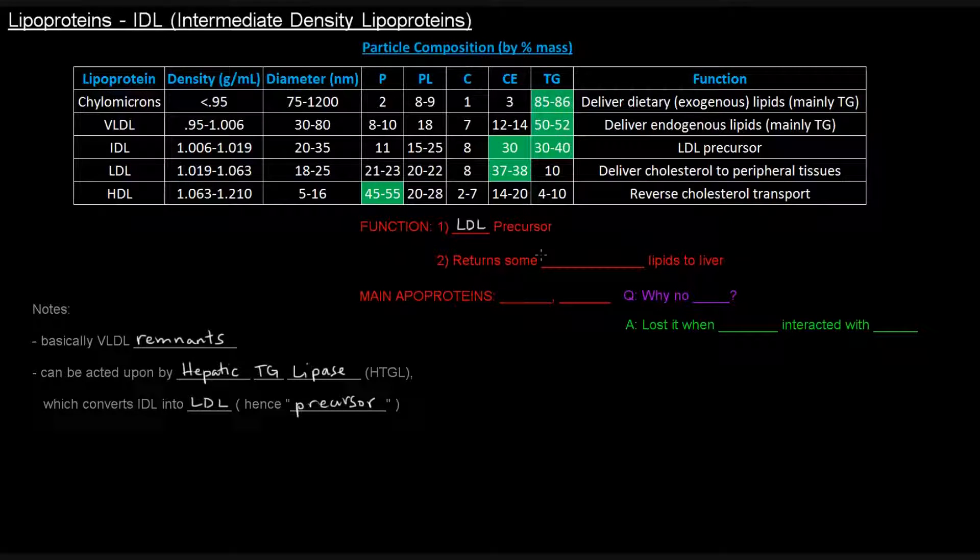Another thing that it does is it returns some of the endogenous lipids to the liver. And its main apoproteins are B100 and E.